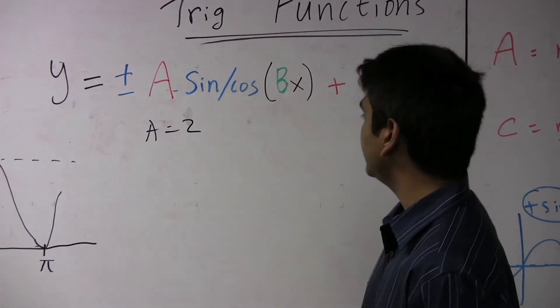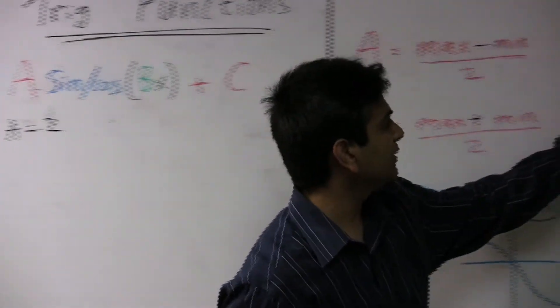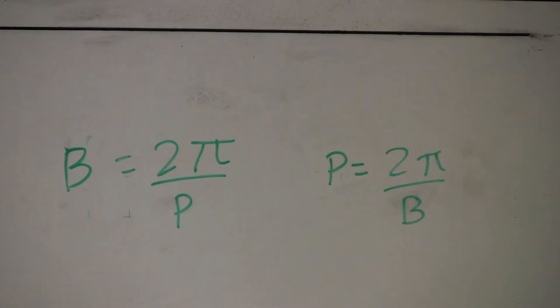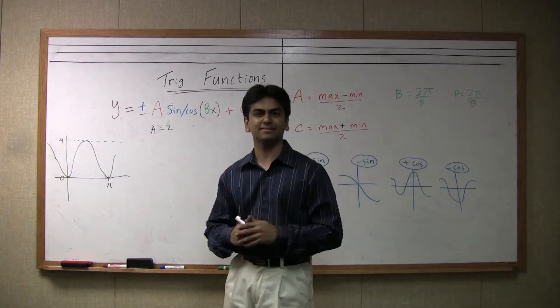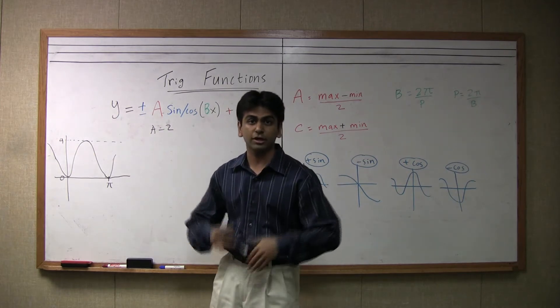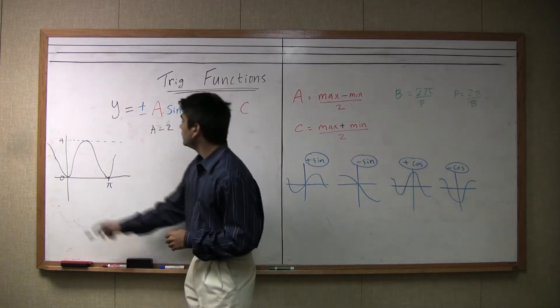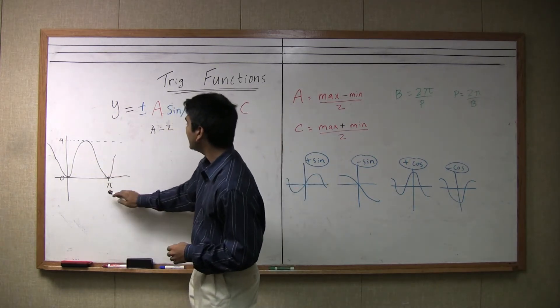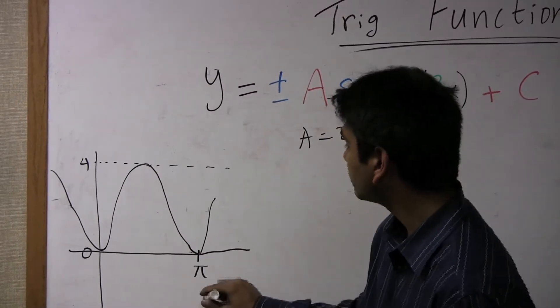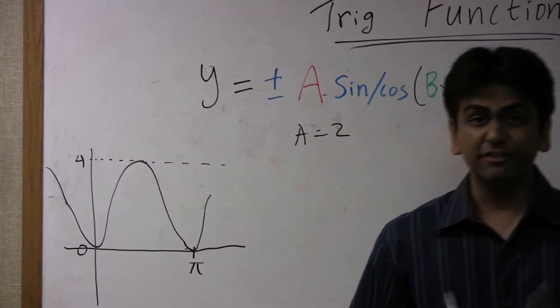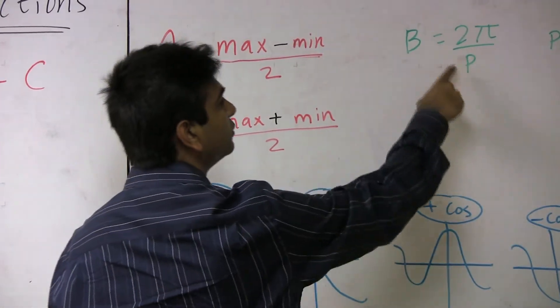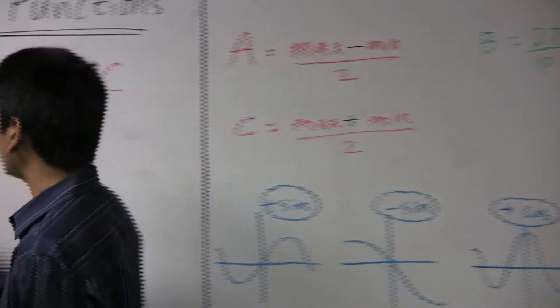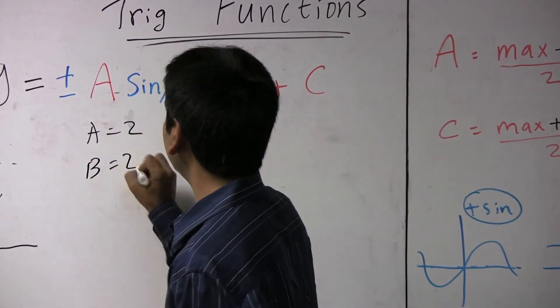Now let's find our b. b over here as we can see is two pi divided by the period, and of course period is then two pi divided by b. So the period is how often the graph repeats itself. That's one of the characteristics of trig functions, they're periodic. So this repeats itself as we can see after pi units, because after pi units it starts going up again. So if p is pi, then as we can see b will be two pi over pi, making b two also. So here b is two.